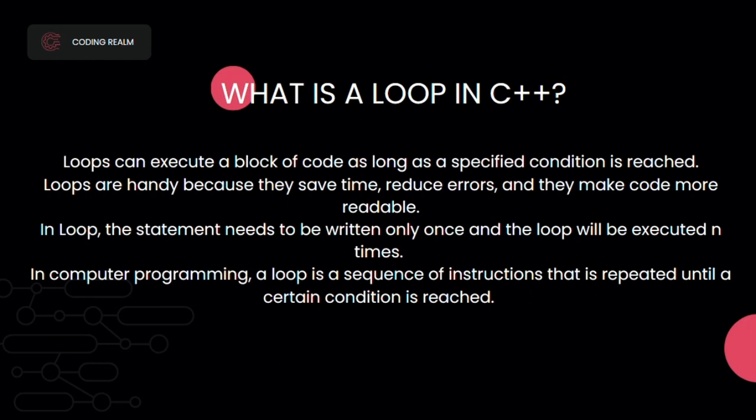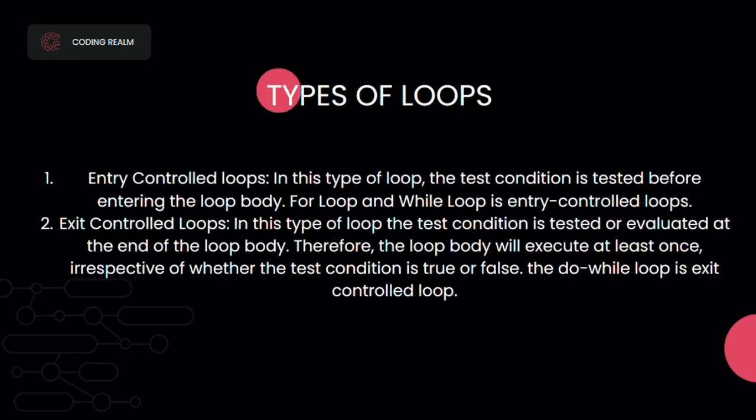With a loop, the statement needs to be written only once and the loop will be executed multiple times. In computer programming, a loop is a sequence of instructions that is repeated until a certain condition is reached. Now the types of loops — we use for, while, and do-while.